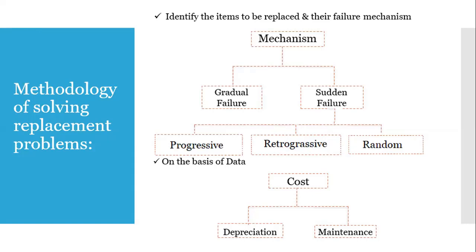There are two different types of cost to consider. First is depreciation — the reduction in the capital cost. If I invested one lakh rupees in a machine, the next year it could be worth 90,000, then 80,000, and so on — that is depreciation cost. Second is maintenance cost — the amount of money spent to repair or maintain the machine in complete working condition.